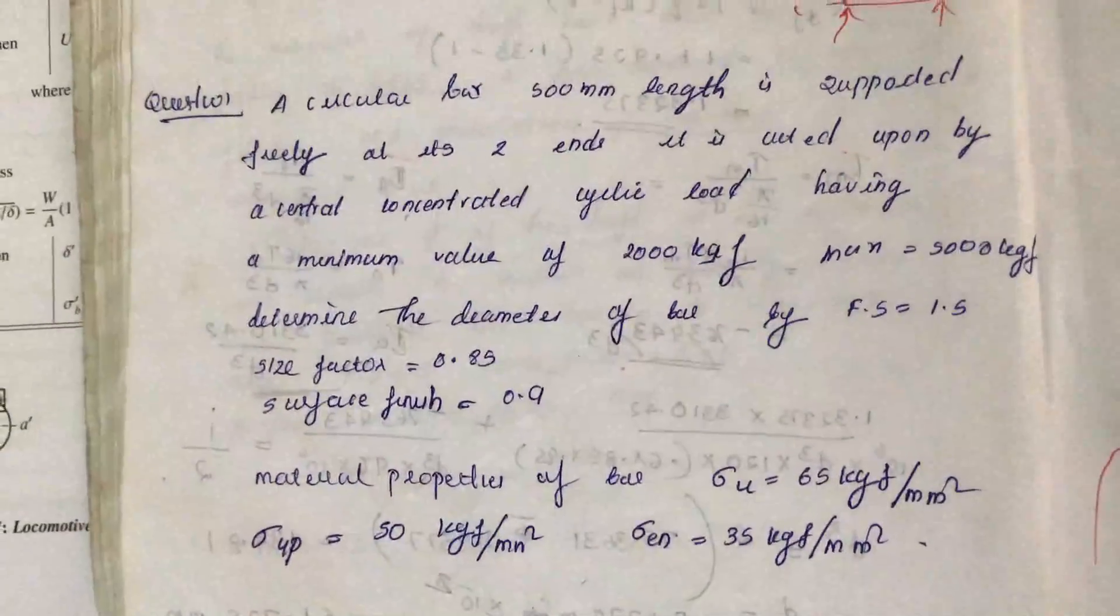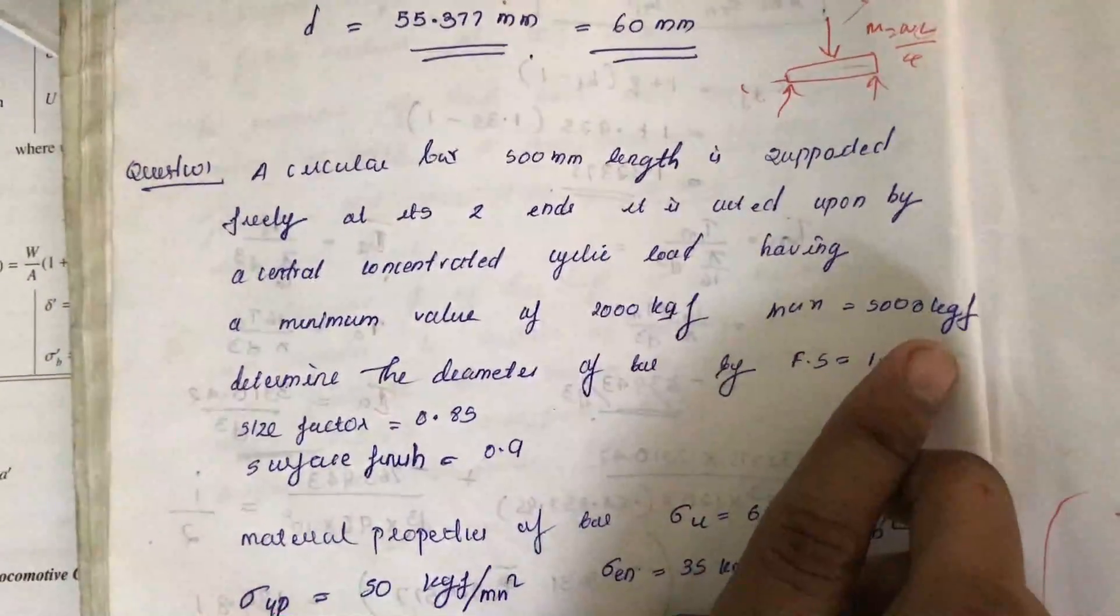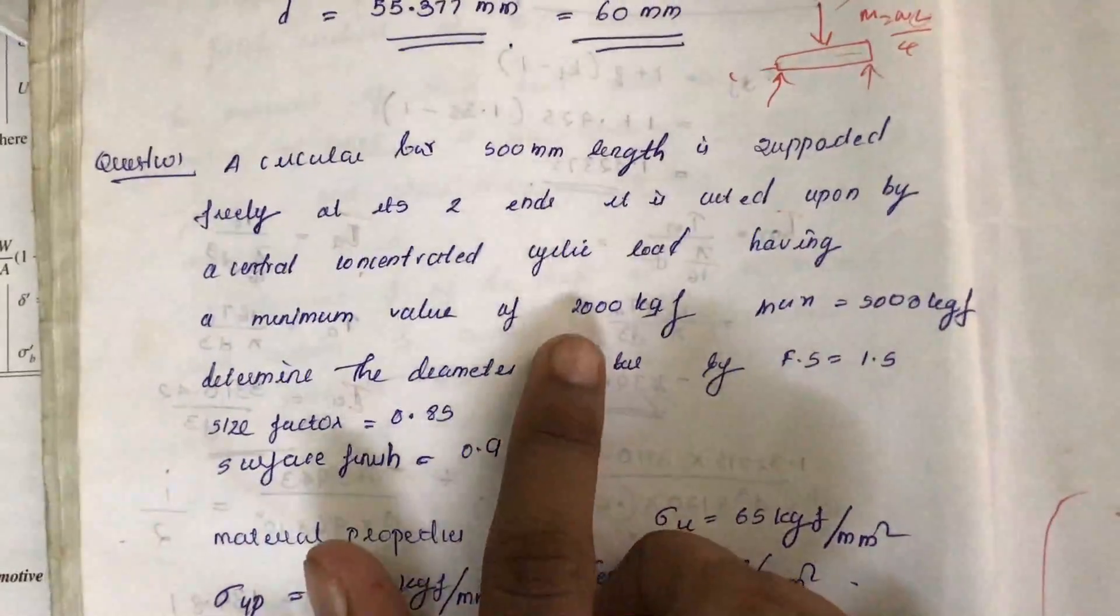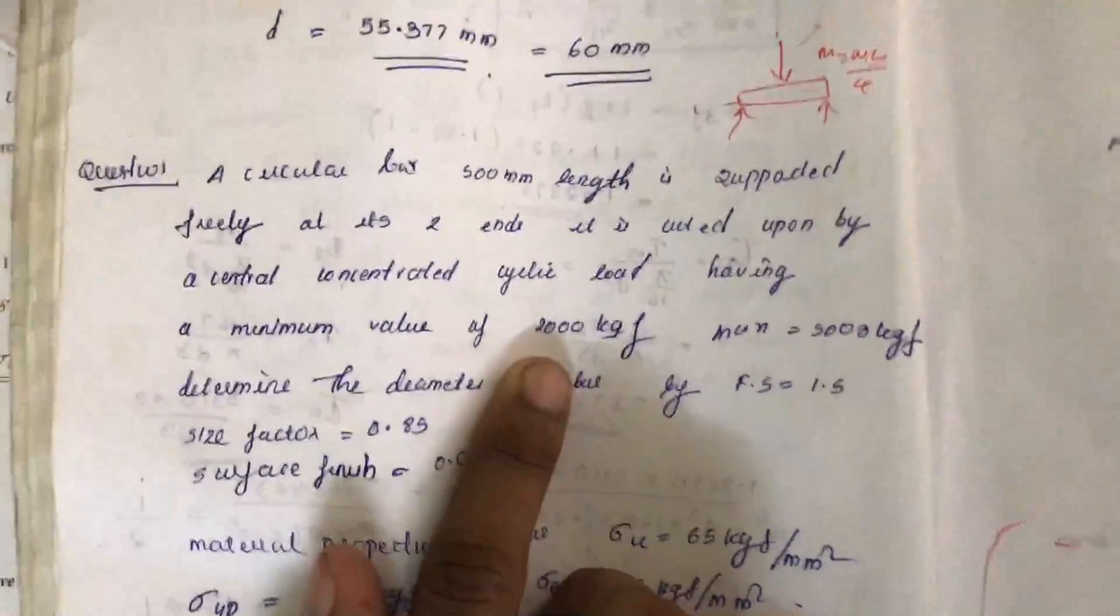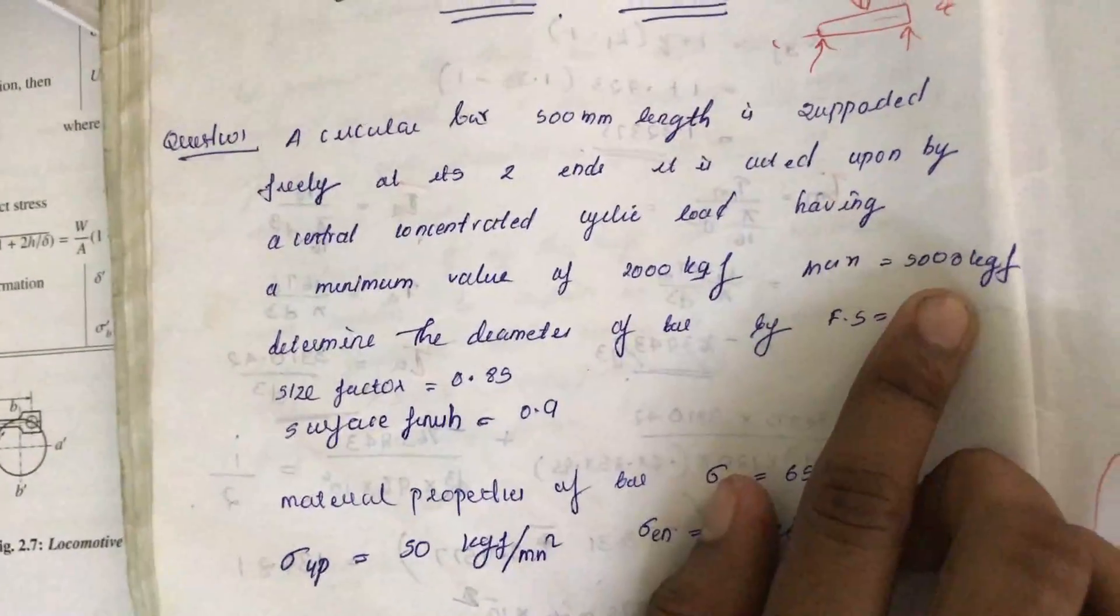The minimum and maximum values of W are given: W minimum equals 2000 kgf and W maximum equals 5000 kgf.